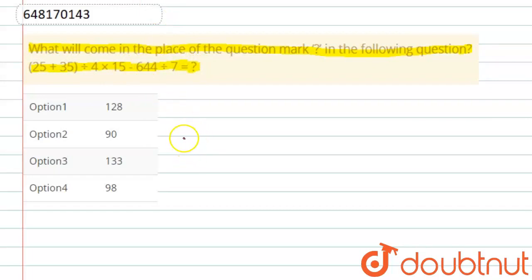So, first of all, let's write the given equation. That is, 25 plus 35, bracket close, divided by 4 into 15 minus 644 divided by 7 equals question mark.